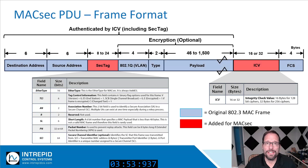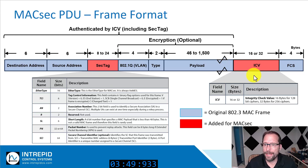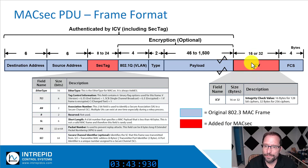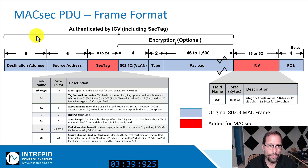A MACSEC PDU is a standard MAC frame with additional information — the SEC tag and the ICV (integrity check value) added. The ICV is either a 16 or 32 byte integrity check value used to authenticate all data in the frame before the ICV.